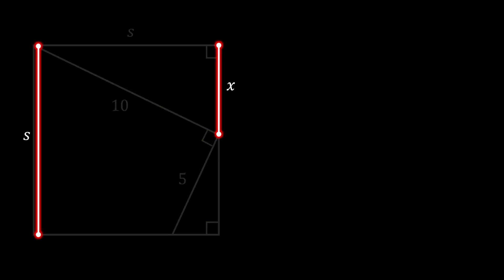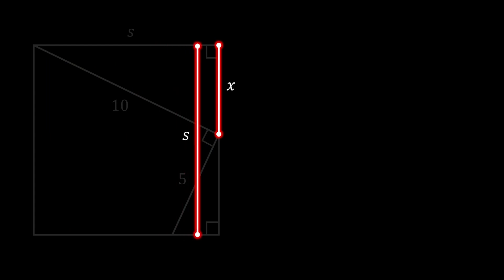Alright, so now let's label the remaining leg of our green triangle as X. And since we know that the side of the square is equal to S, you can clearly see that the remaining segment of the right side of the square must be equal to the difference between the side of the square and X.